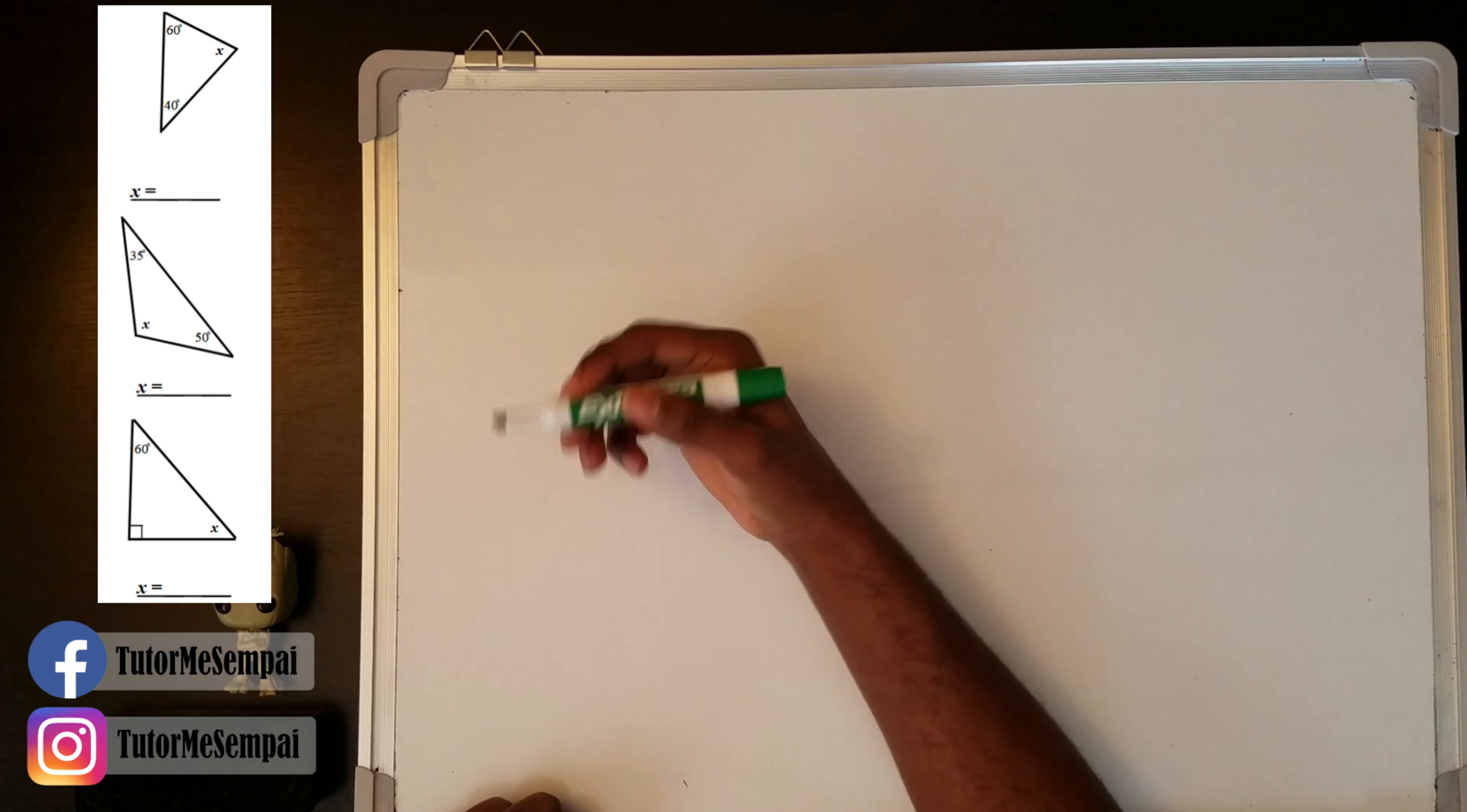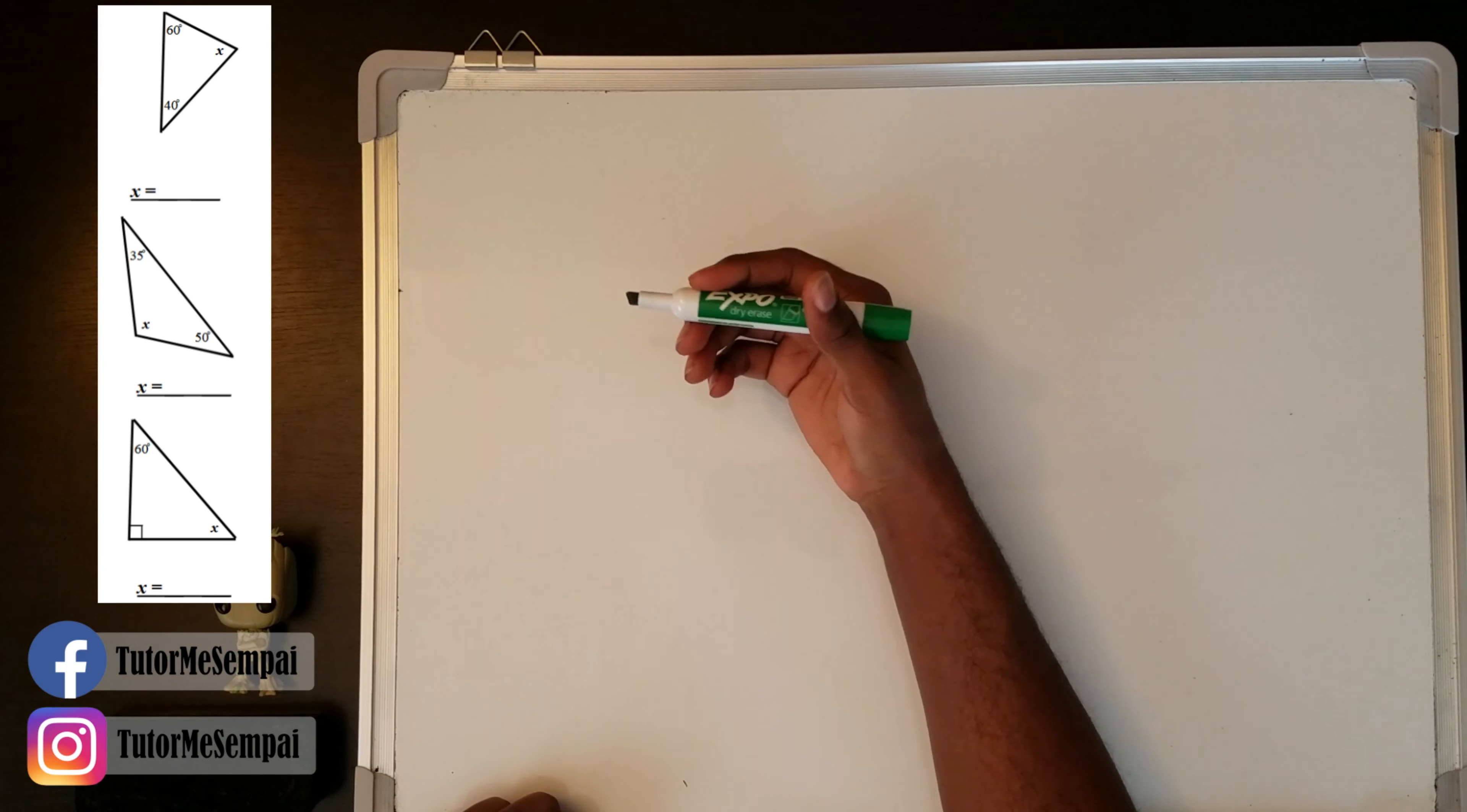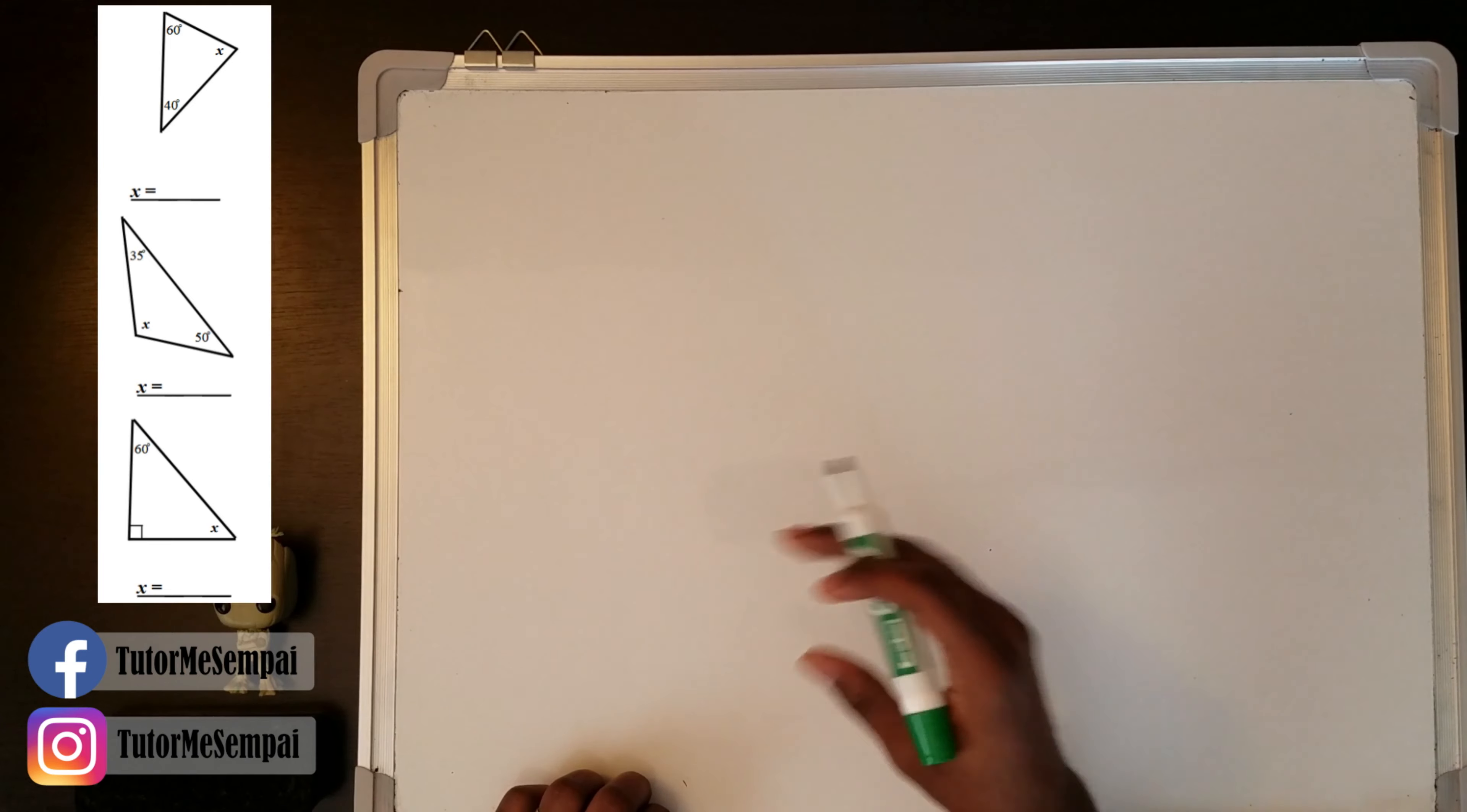So today we have these three triangles and you will notice that each of these three triangles has an X for one of the angles. So we want to find out what that X is given the other two interior angles. If this seems a little confusing, no worries. There's actually one fact that you need to know that makes all of this rather simple.